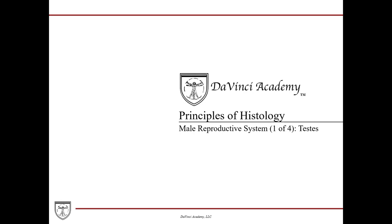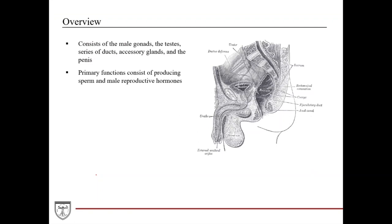This is the first of four lectures for the histology of the male reproductive system. In this lecture, we're going to be covering the histology and the relevant physiology of the testes. The male reproductive system consists of the male gonads, the testes, a series of ducts, the accessory glands, and the penis. The primary function consists of producing sperm and male reproductive hormones, the primary one being testosterone.